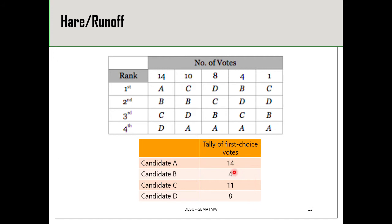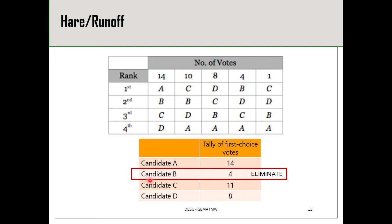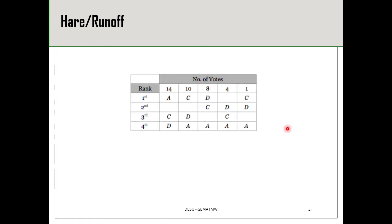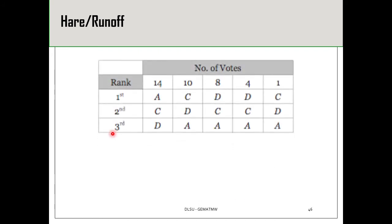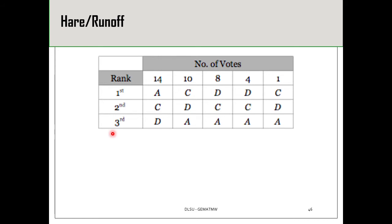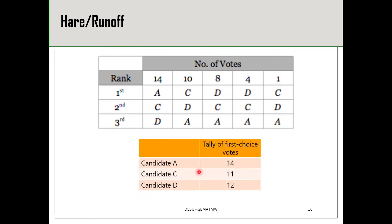Since no candidate received more than half of the first place votes, we eliminate the candidate with the lowest first place votes — in this case, candidate B. After eliminating candidate B, those cells will be empty. We adjust the preferential table by pushing the candidates upward. From the adjusted table, tallying again gives candidate A with 14, candidate C with 11, and candidate D with 12.